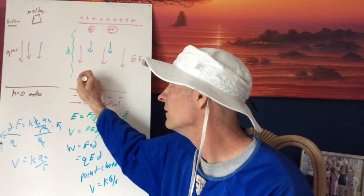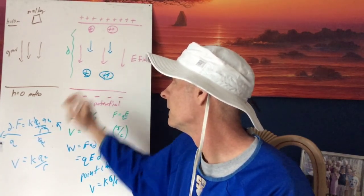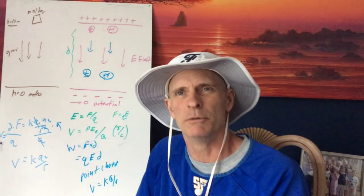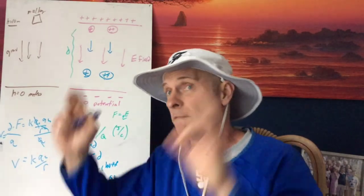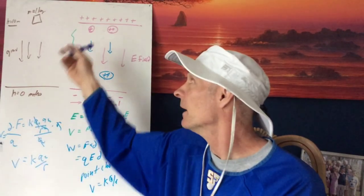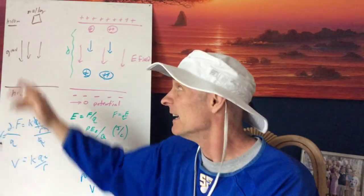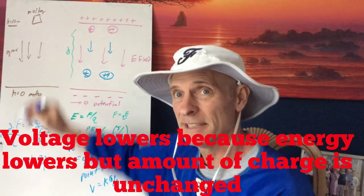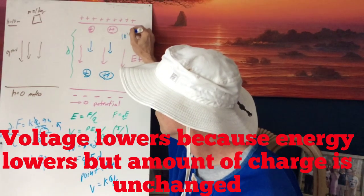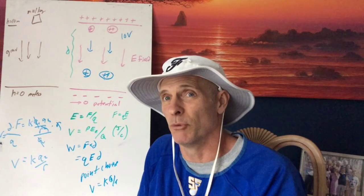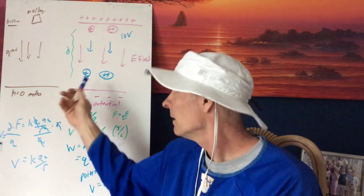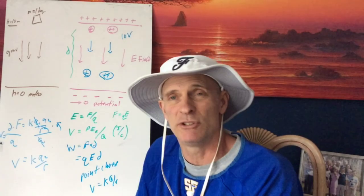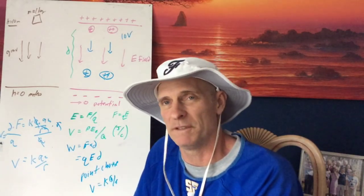So if I draw these charges in their lower position, they would be at a lower electric potential — a lower voltage — than they would be higher up. Similar to the gravitational field analogy: let's say up here is 10 volts. The ratio of energy per charge can be the same for both charges, but the total energy might be different because the charges are different. If it's 10 volts up here, it may only be two or three volts down here, based on how far the field had to move the charges.